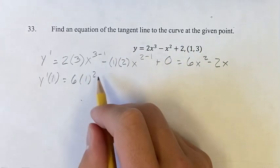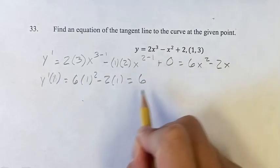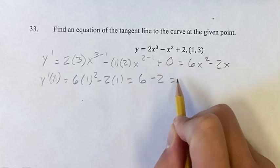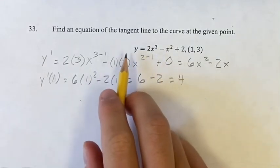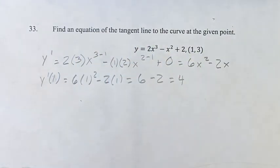So 6 times 1 squared minus 2 times 1. Solving this, we have 6 times 1, which is just 6. Minus 2 times 1 is 2. So the derivative of this curve at this point is 4, which means this is going to be the slope of the tangent line at this point.